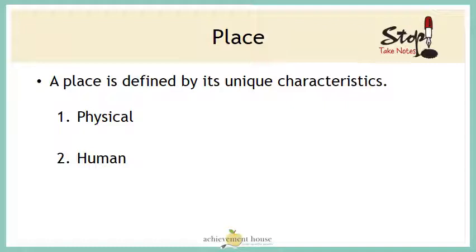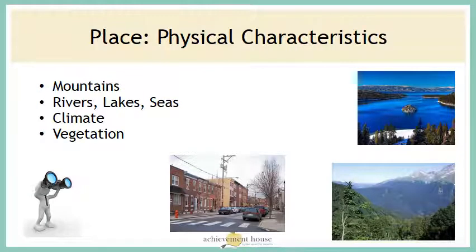The theme of place defines a place's unique characteristics. There are two ways we describe this: physical characteristics and human characteristics. If you want to describe a place using its physical characteristics you would describe the mountains, rivers, lakes, and seas, the climate, or the vegetation. Vegetation means the plants or trees that grow there. These are all the natural characteristics of a location.